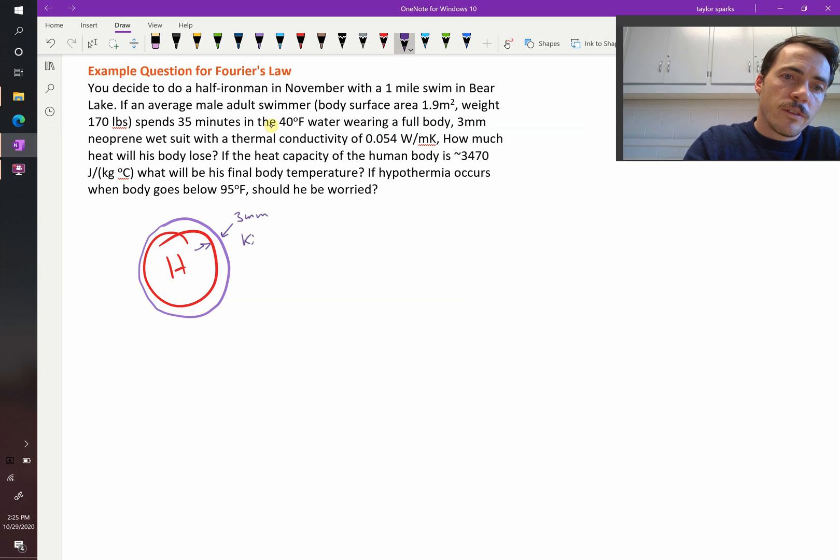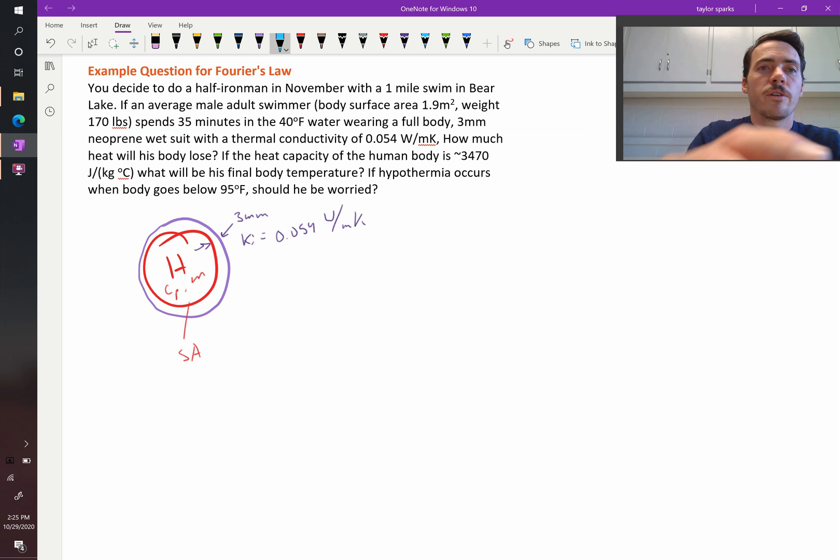The thermal conductivity of that neoprene we know is 0.054 watts per meter Kelvin. We know the heat capacity of a human body. We know the surface area. We know the mass of the human body. We know all those things. We know the temperature of the water out here. The temperature out here is 40 degrees Fahrenheit.